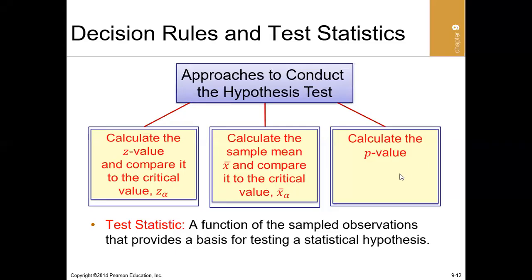In this section we are going to talk about the approaches to hypothesis testing. The first approach is to calculate the z value and compare it to the critical value. The second approach is to calculate a sample mean and compare it to the critical mean. The third approach is to compute the p-value.